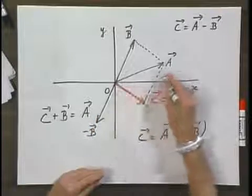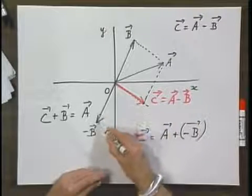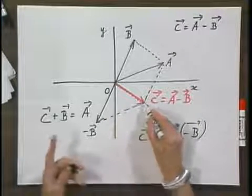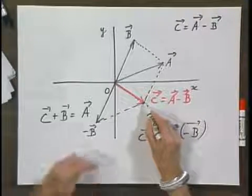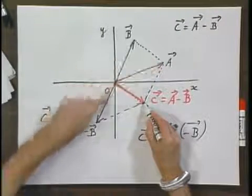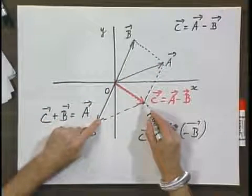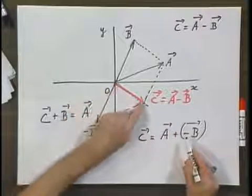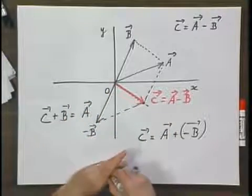There we go. And where do I end up? Right here. So notice that the sum of this vector and this vector, according to the summation rules, indeed gives me this vector.